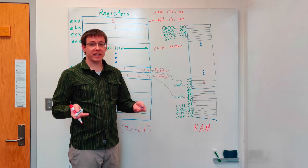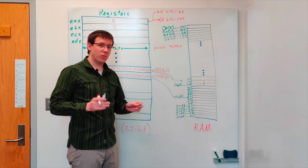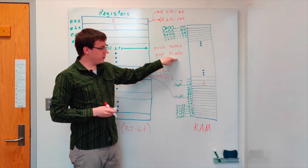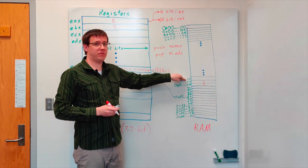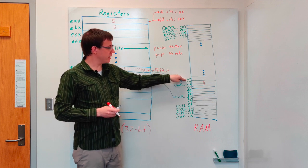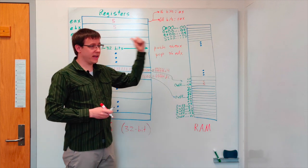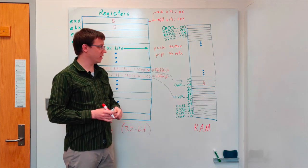We can also take data off of the stack with the POP instruction. The POP instruction takes something off the top of the stack, so it moves the stack pointer down by one and copies the data that was on top of the stack into the register we specify.